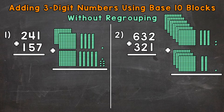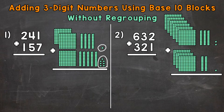Both of those numbers are represented by base 10 blocks to the right of the problem. When we add, we're going to start with the ones place. So we have 1 one plus 7 ones. The 1 one is represented here from the number 241, and then 7 ones from the number 157 are represented here. So 1 plus 7 gives us a total of 8 ones.